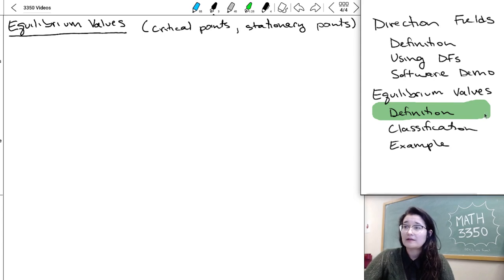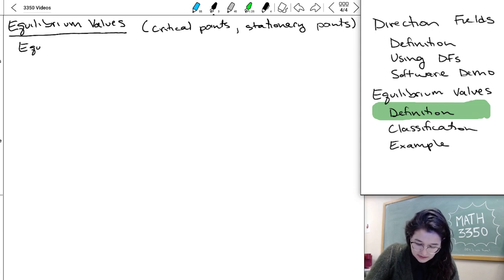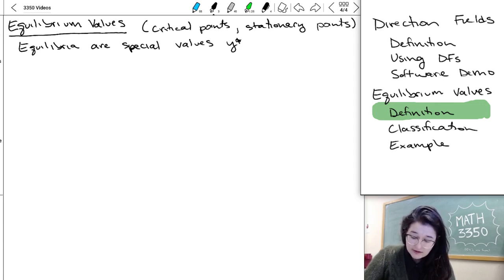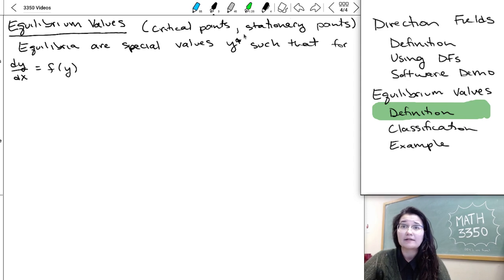But we're going to start off talking about what the definition of an equilibrium value is. So equilibria, that's the plural of equilibrium, are special values that we're going to denote by y star. So there's some value that our solution to the ODE takes on. And they're going to be defined for a given ODE, dy/dx equal to f(y). So we don't have like before f(x,y), these can only depend on y in the differential equation.